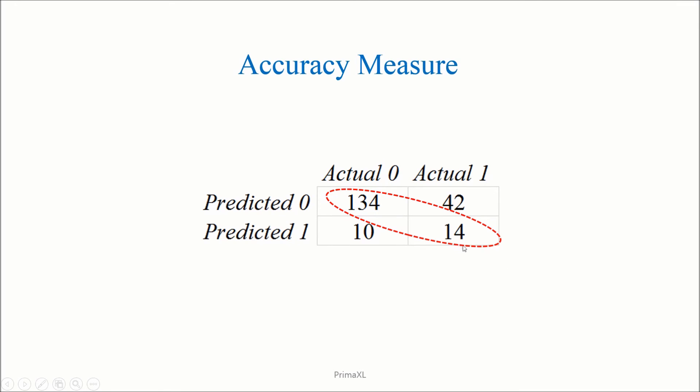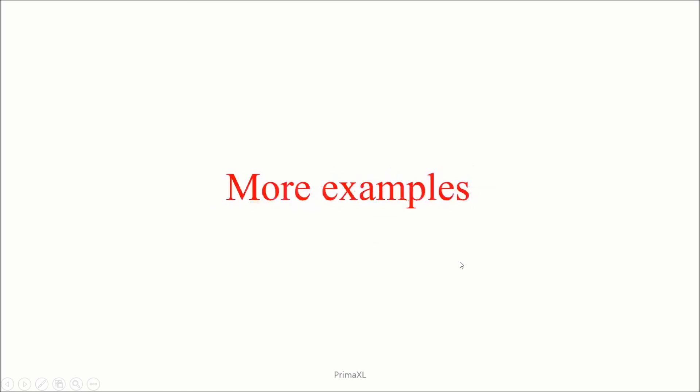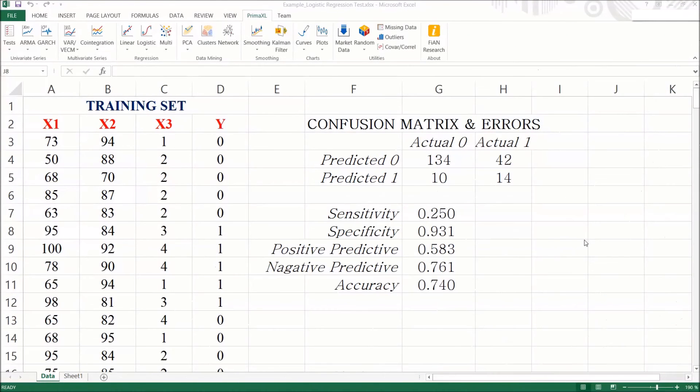Okay, a couple of more examples. Back to the same Excel file we had before. We will just change the value of the probability cutoff and see how it affects the result. Please remember that we had a cutoff equal to 0.5 before. Also remember the values of the sensitivity, the specificity, and the accuracy.